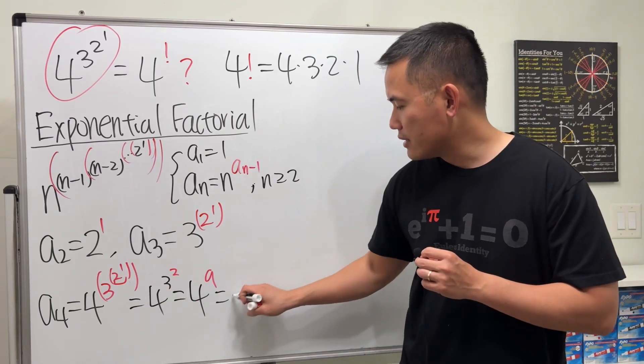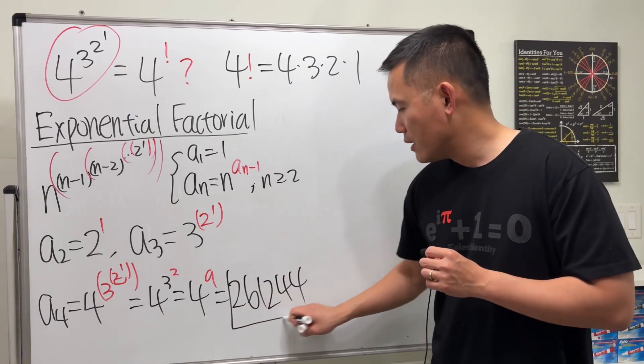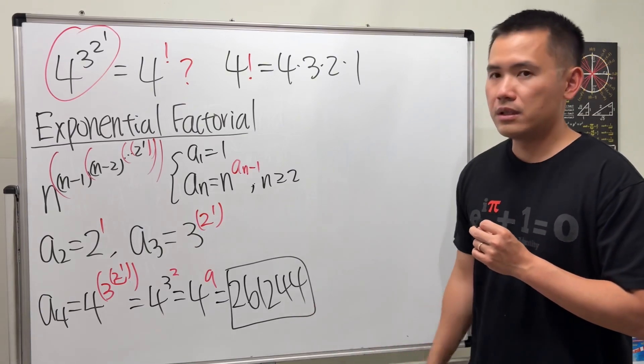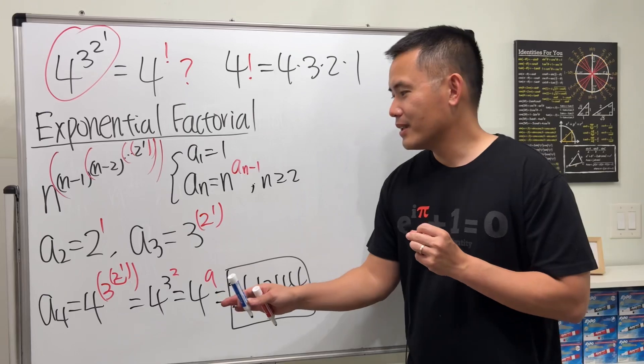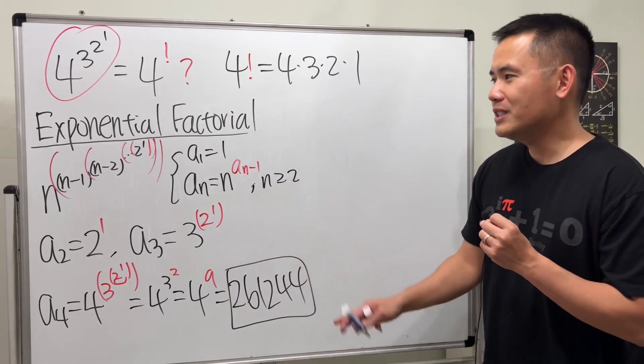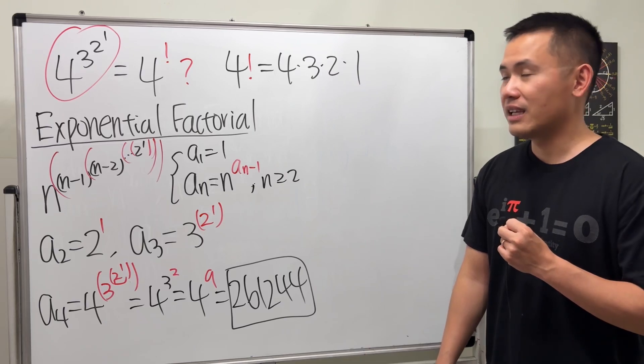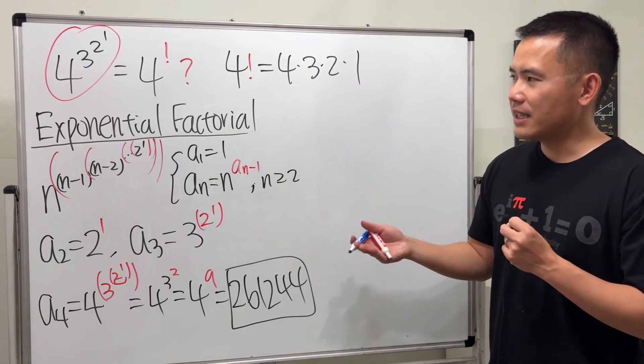And then four to the nine is 262144. I saw the answer earlier and then I remembered it. Yeah, as you can see, the numbers grow pretty fast. So it's pretty exciting. Unfortunately, I really don't think we have a nice notation for that though. Let me just kind of bring up another factorial to make a comparison.